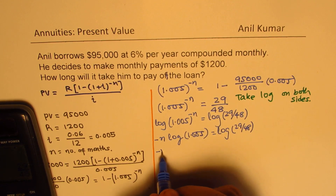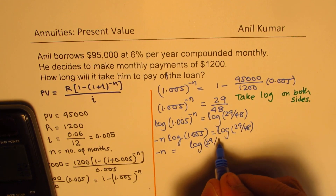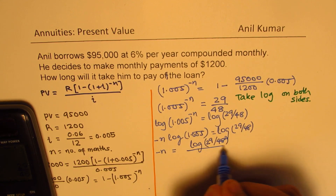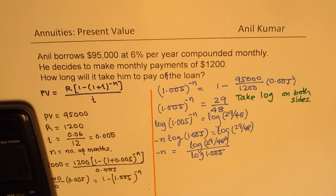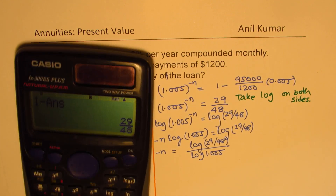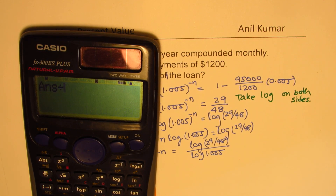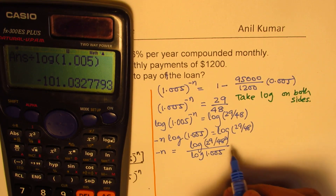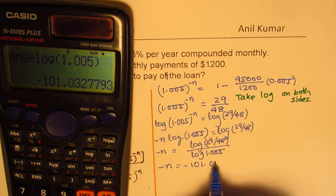So we can say minus n equals log(29/48) divided by log(1.005). That is how we'll find n. We calculate log(29/48) divided by log(1.005), and we get minus n equals minus 101.03.